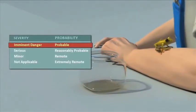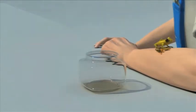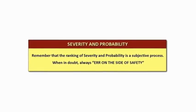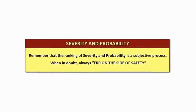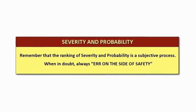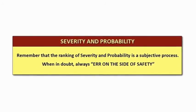Understand that the frog hazard always had the potential to cause harm, whether in or out of the jar. As soon as the circumstances are modified, the risk ratings change. Remember, the ranking of severity and probability is a subjective process. When in doubt, always err on the side of safety.